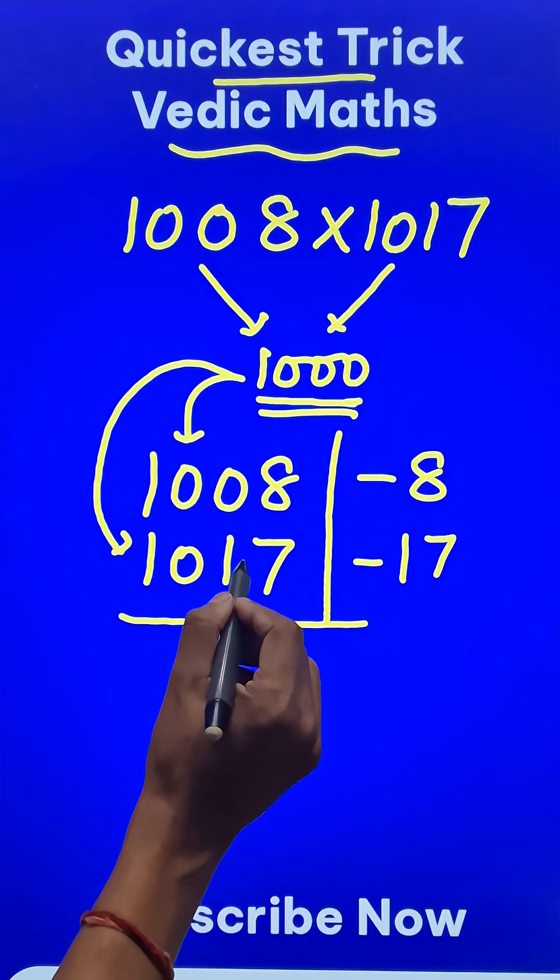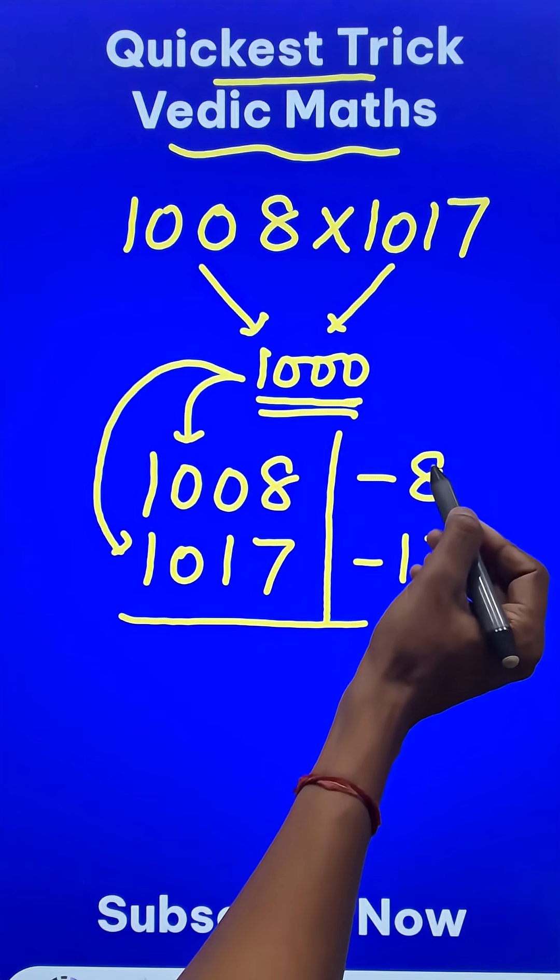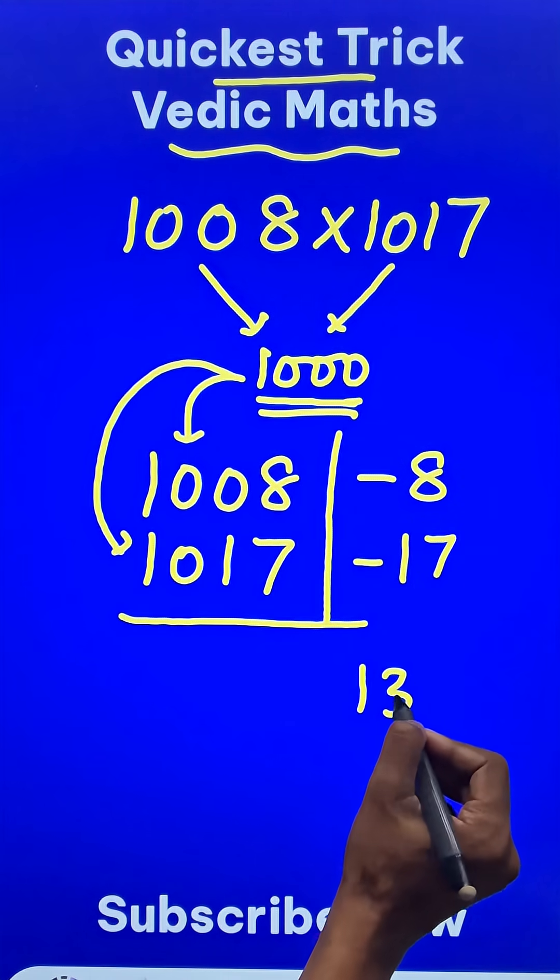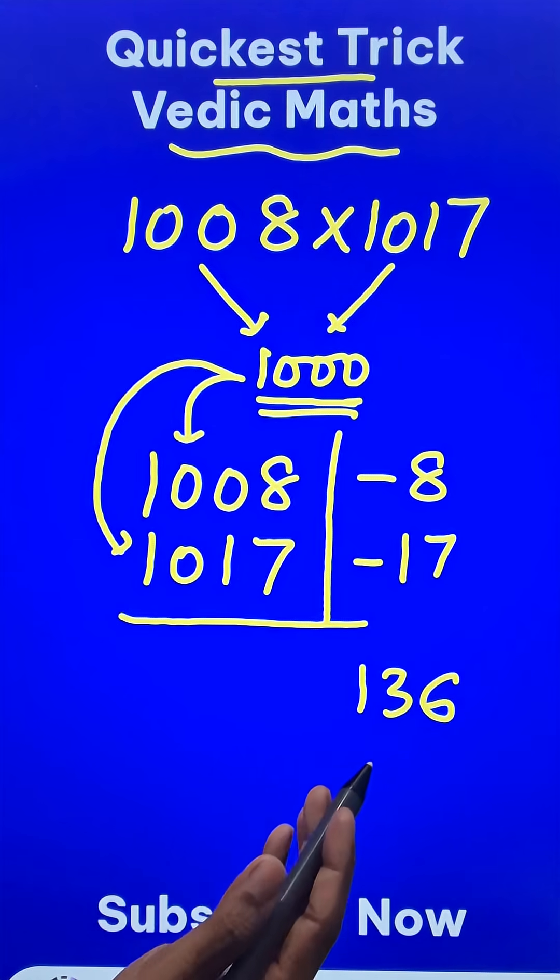So instead of multiplying the big numbers you have to multiply these small excess quantities. And 17 times 8 is 136, minus and minus it becomes plus. So we don't need to bother about the sign.